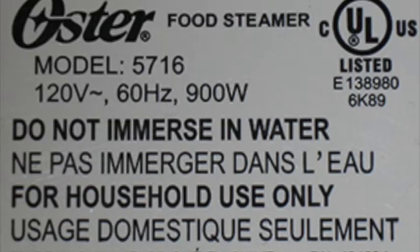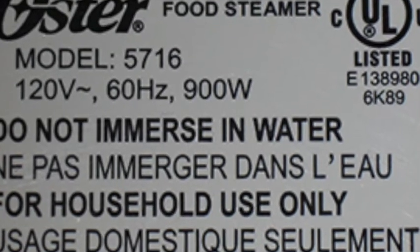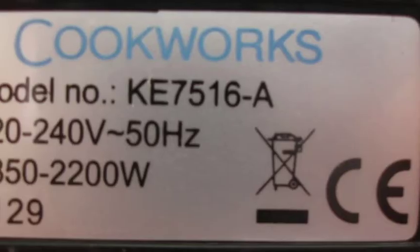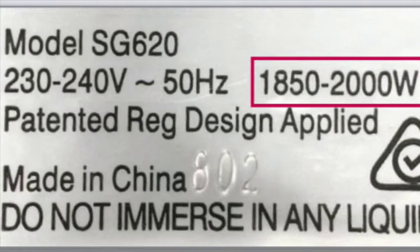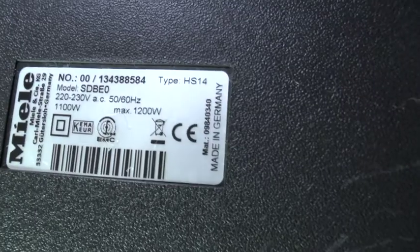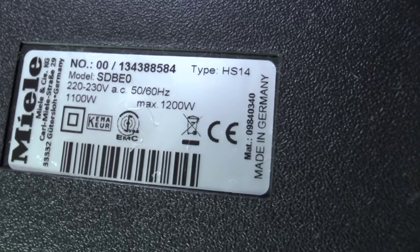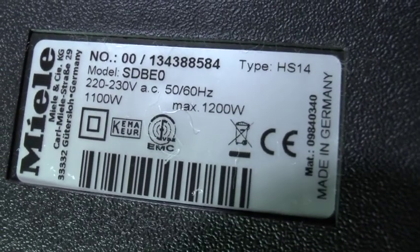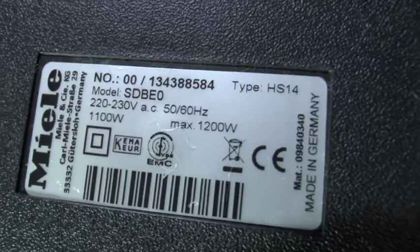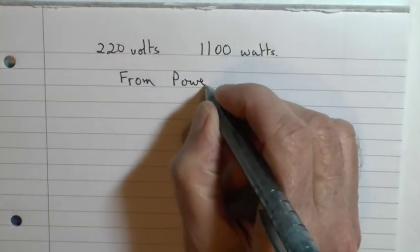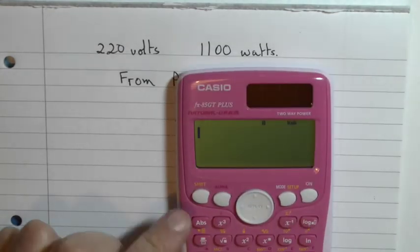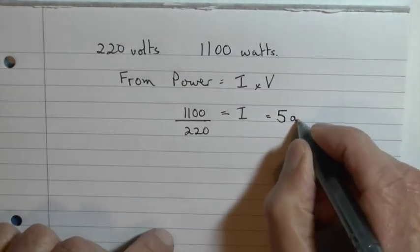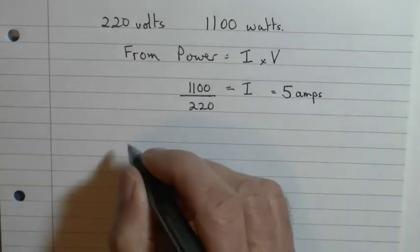All mains electrical machines and devices should have on them somewhere a label stating the power and the voltage on which they operate. From that you can calculate the current that will run through it and perhaps more importantly the cost of running it. Taking the first example, this vacuum cleaner: if it's run at 220 volts, then the power is 1100 watts. From power is current times voltage, the current therefore is power over voltage. If we divide those two, we scarcely need a calculator, but it's 5 amps.